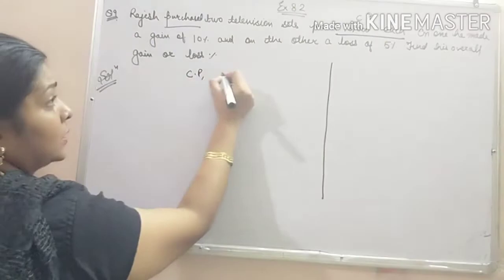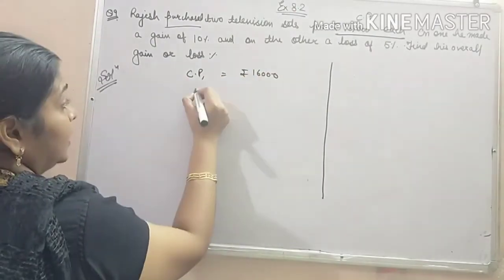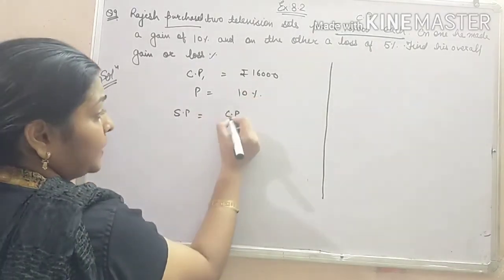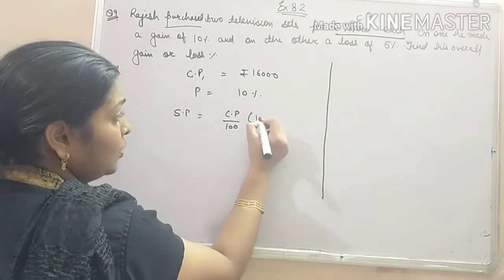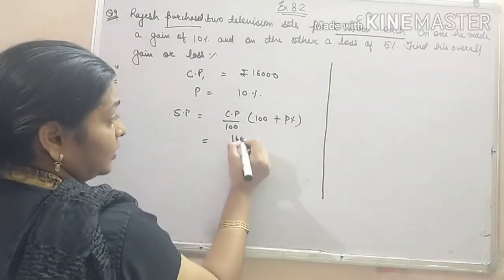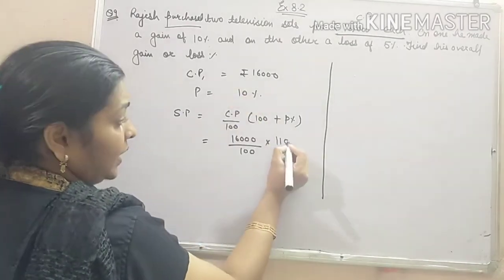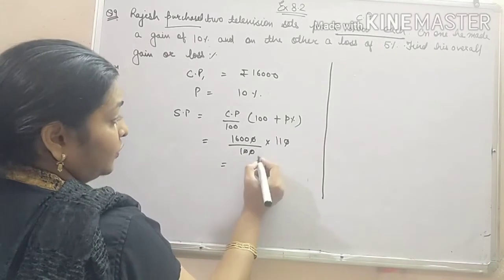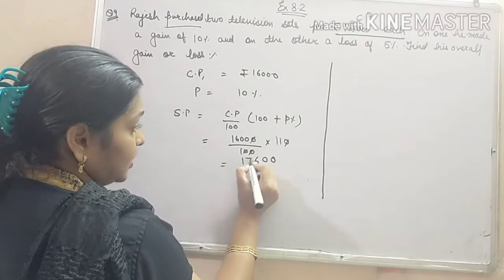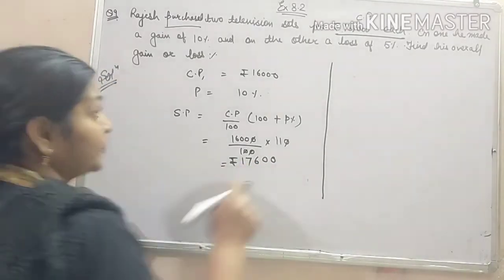Here, CP is Rs. 16,000 and profit is 10%. SP will be equal to CP divided by 100, multiplied by (100 + P%). That gives us 16,000 divided by 100, multiplied by 110, which equals Rs. 17,600.